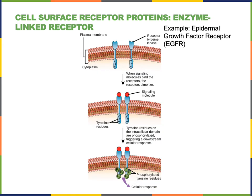Enzyme-linked receptors are another category of cell surface receptor proteins. When the ligand binds to the receptor, the receptor will become activated as an enzyme that can catalyze a chemical reaction. The receptor tyrosine kinases are a large subgroup of enzyme-linked receptors, and the epidermal growth factor receptor (EGFR) is a specific example of a receptor tyrosine kinase.